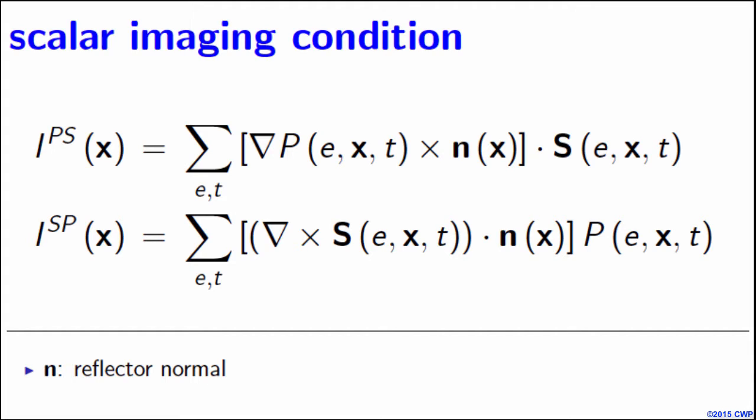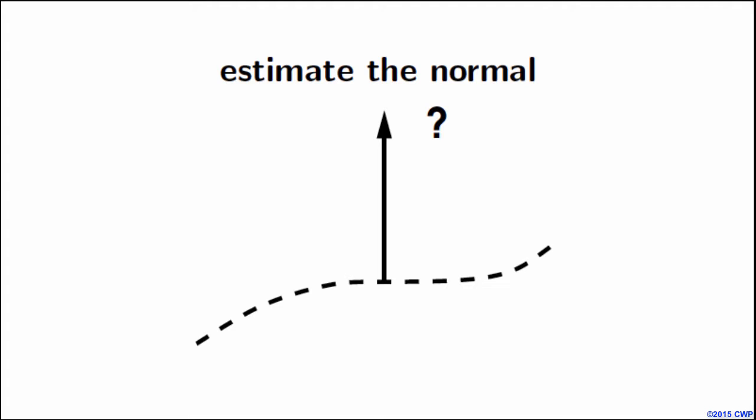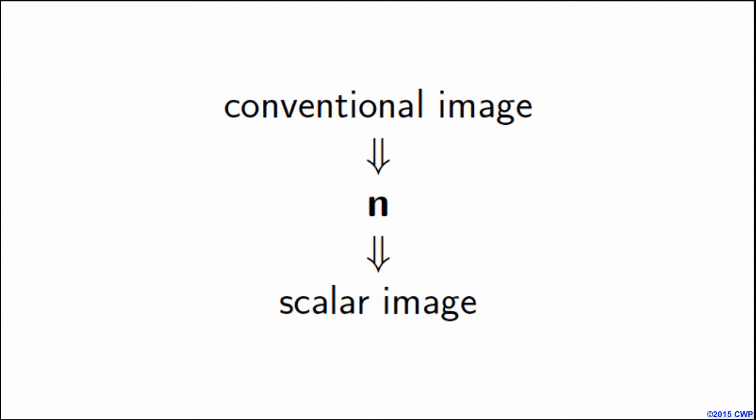Back to this image — one of the biggest questions we received was: how do we estimate the reflector normal? Here, with a known model, we already have this information, but in practice this is not easy to obtain. Our solution is to estimate the reflector normal from prior images computed using conventional imaging conditions — that is, PP, PS, SP, and SS images — and then use that estimated N to compute the scalar image.